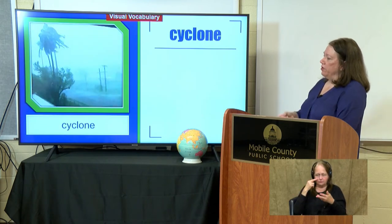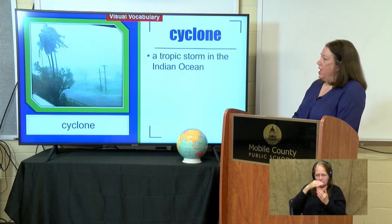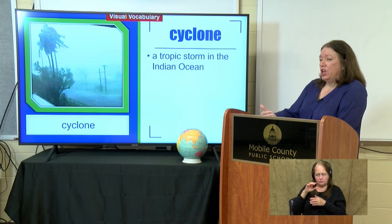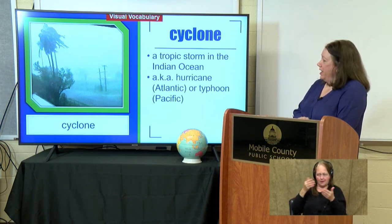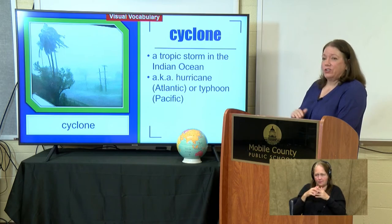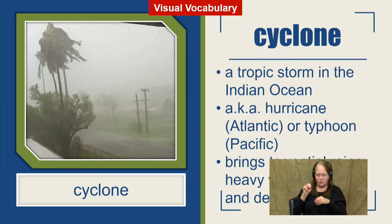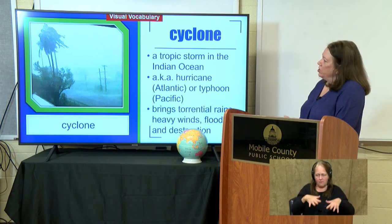Another visual vocabulary word for this region is cyclone. A cyclone is a tropical storm in the Indian Ocean. We know what a cyclone is — we just don't call it that here in Alabama. We call them hurricanes in the Atlantic, and they're also called typhoons in some parts of the world. These are the storms that bring torrential rain, devastating winds, flooding, and other destruction during the summer months.